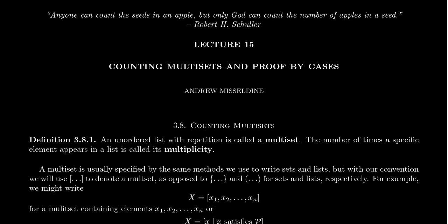Continuing in our sequence about combinatorics, where we're spending time counting sets and lists, I want to introduce a new type of list into our conversation and try to count those like we've been considering with previous ones. We introduced the general idea of a list, but we've discovered that things like order and repetition seem to make a big difference on the type of list that we have.